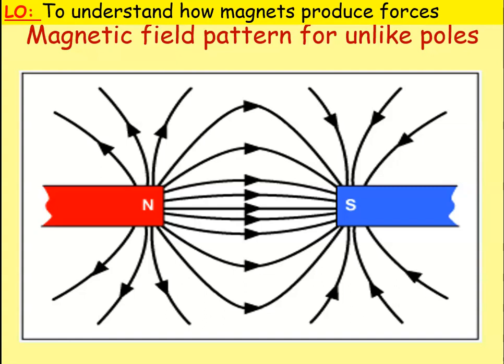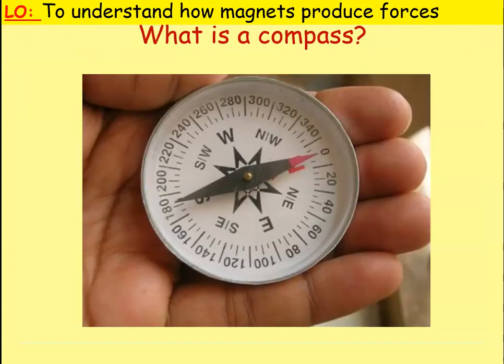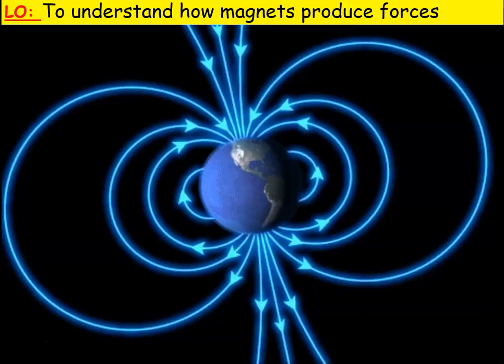So what's a compass? You've seen one used for navigation — it constantly points north. Basically, a compass is a small freely suspended magnet. It works because the Earth has a magnetic field, and the compass needle lines up with the Earth's magnetic field, always pointing to the north pole of the Earth.